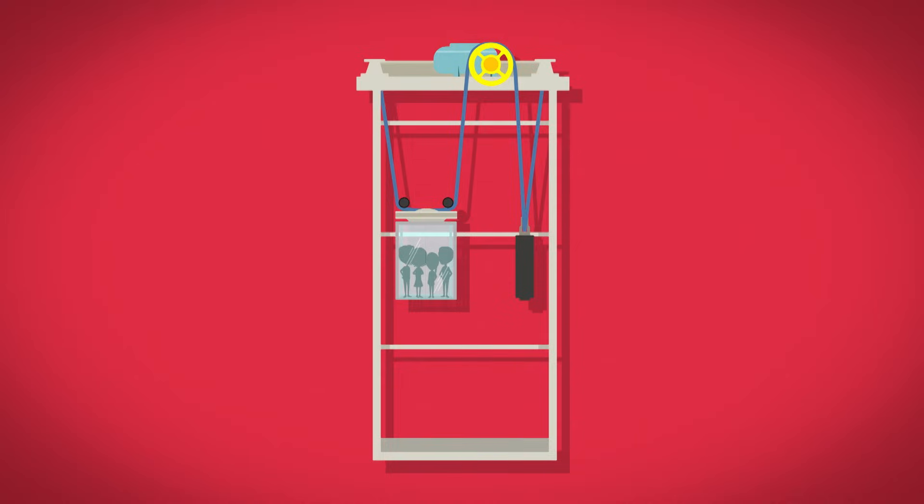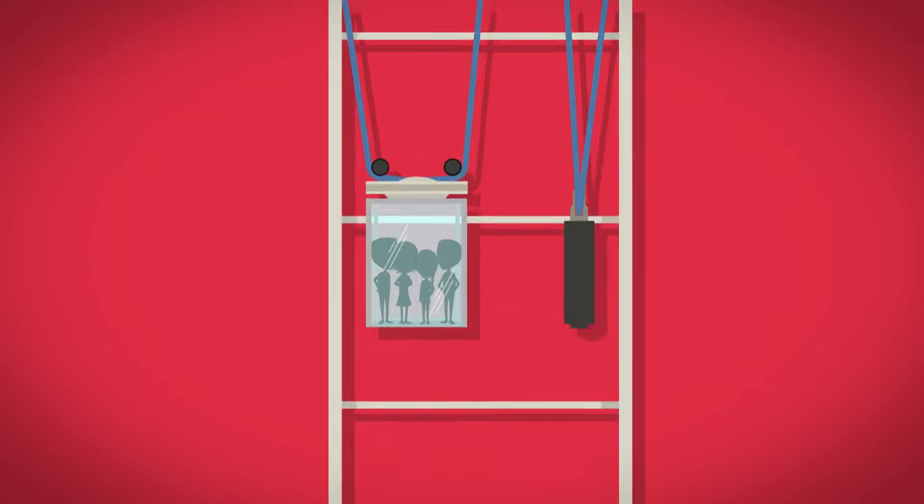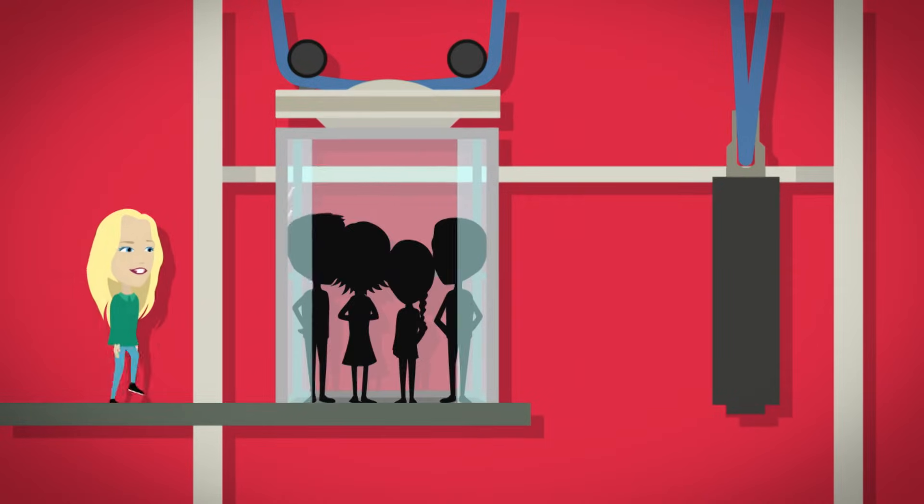Inside the lift shaft the lift car hangs on steel ropes fixed by an anchor. The steel ropes go over a wheel called a sheave. Hanging from the other end of the steel ropes is a heavy weight called a counterweight. The counterweight weighs almost the same as a lift full of people.